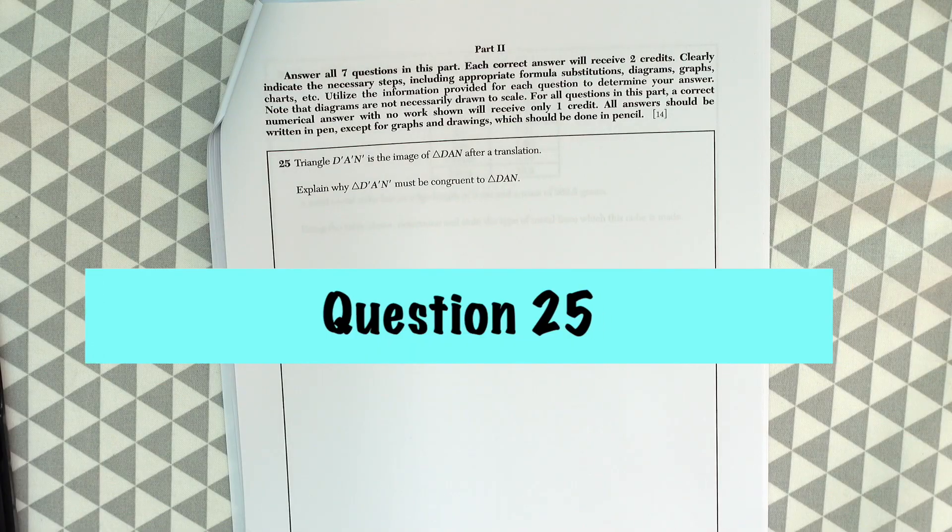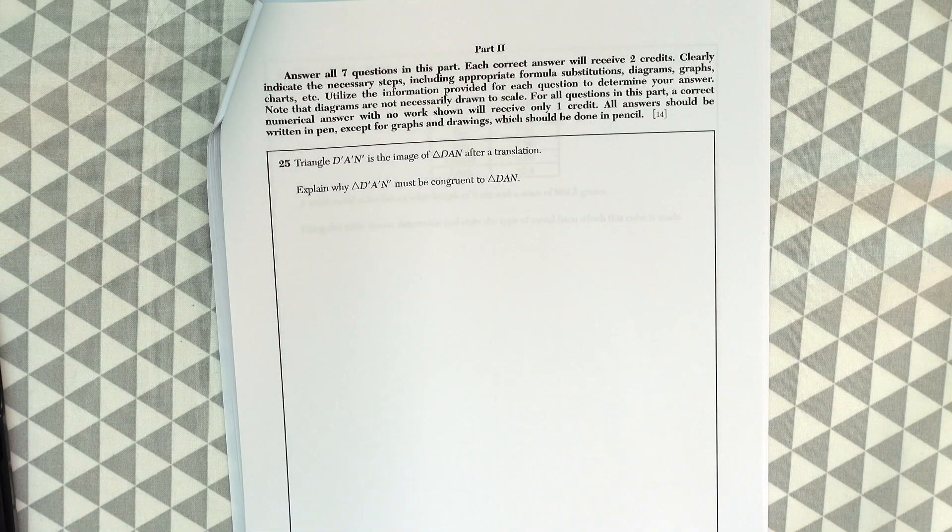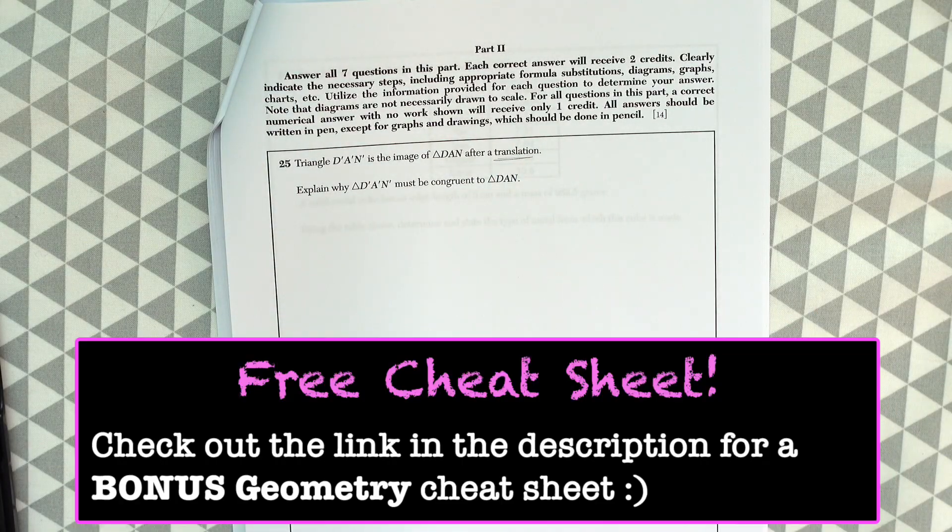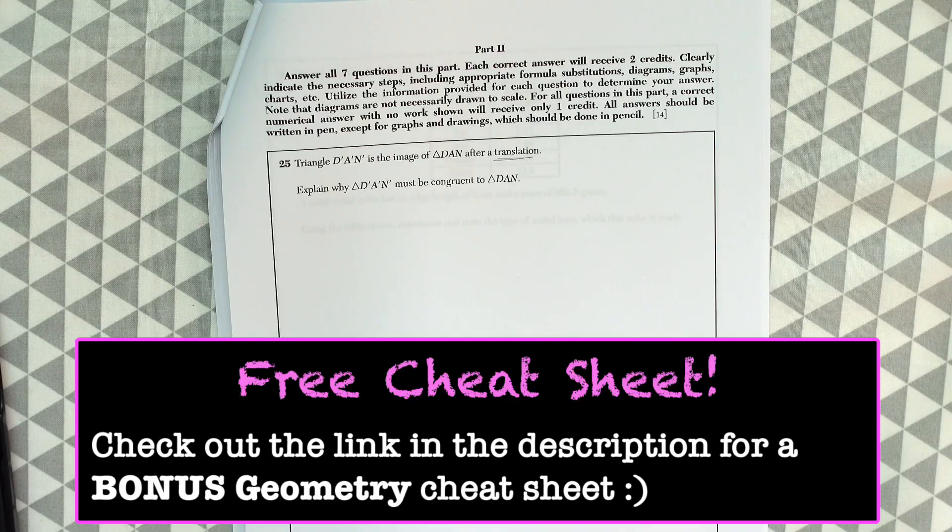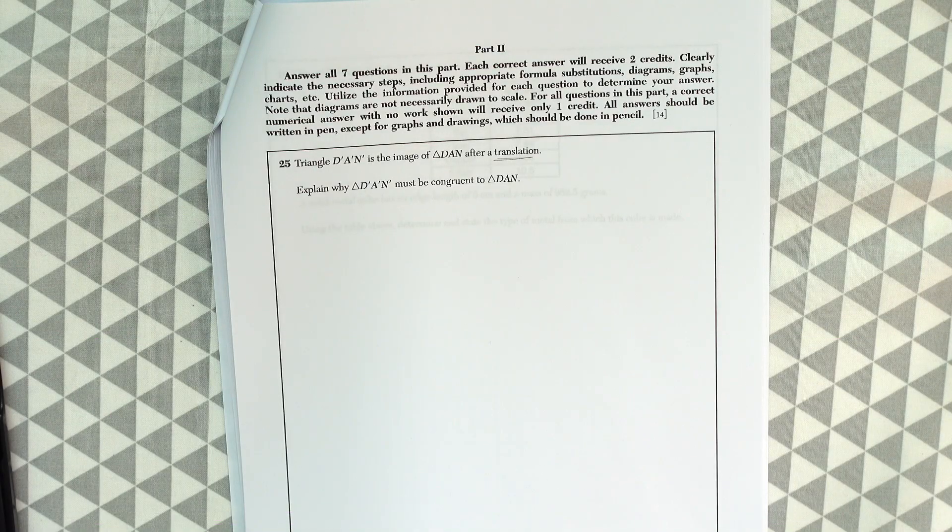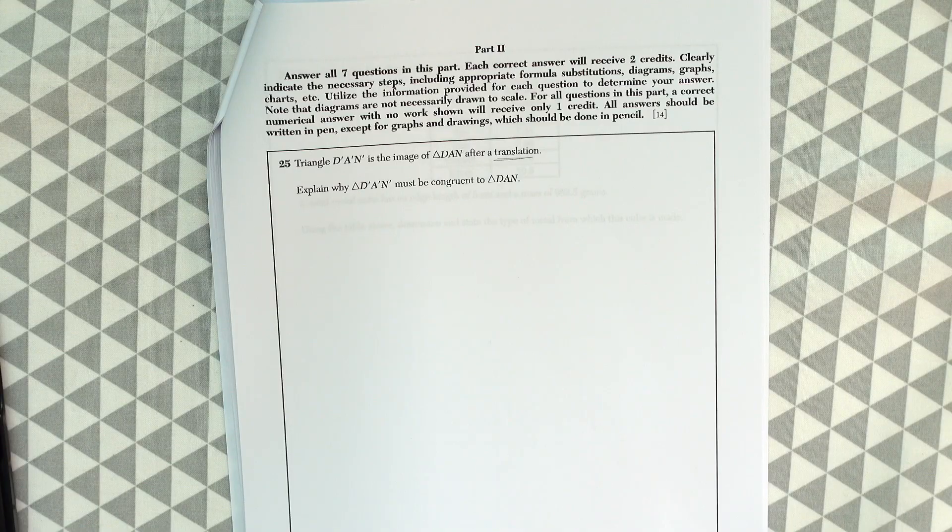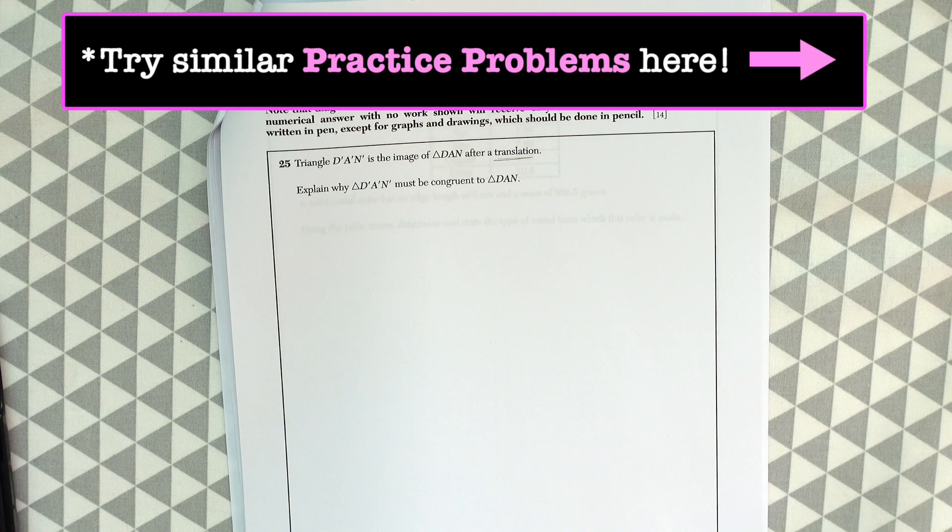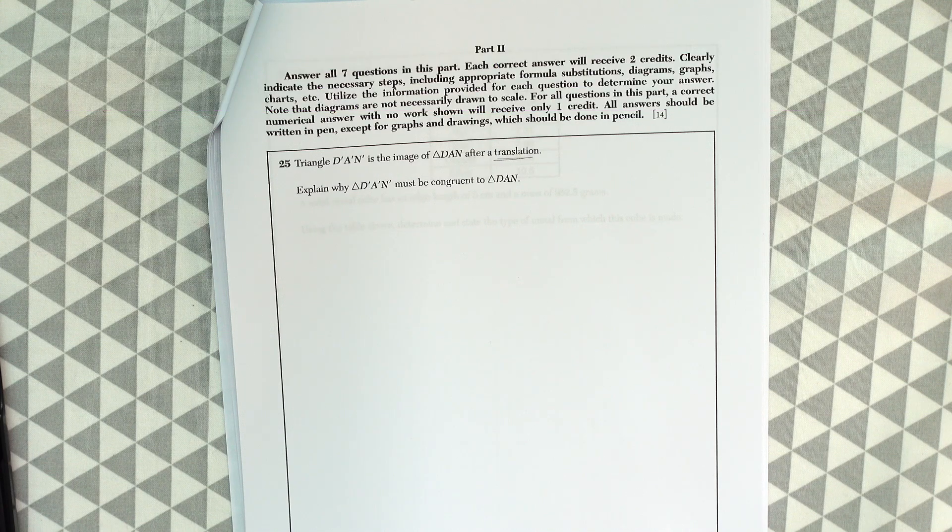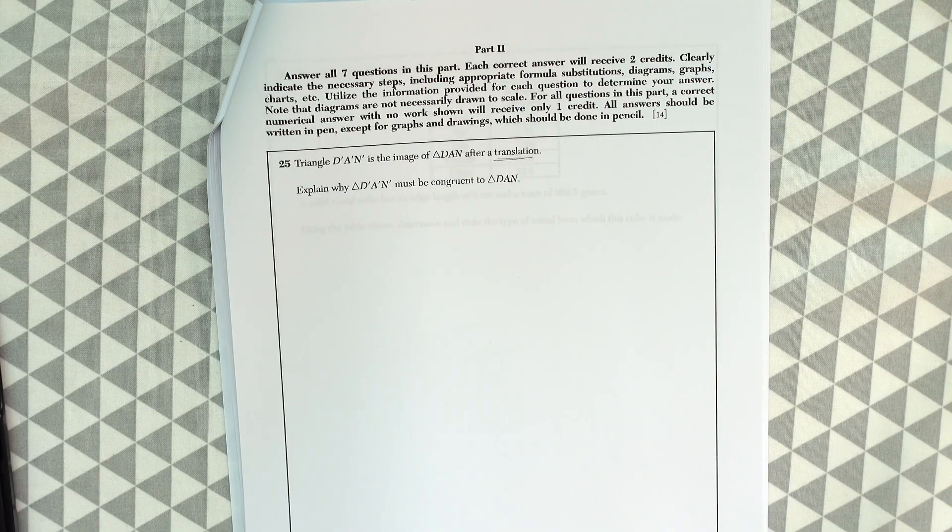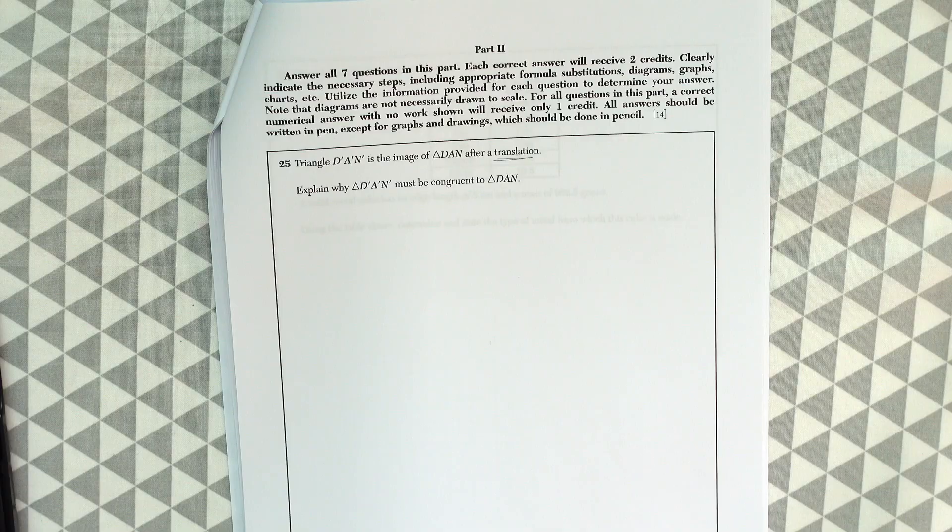Triangle d prime a prime n prime is the image of triangle d a n after a translation. So remember translation is when we move a shape like up a couple units and over to the right a couple units something like that. Explain why triangle d prime a prime n prime must be congruent to triangle d a n. So when we're doing a translation this is a type of transformation where all angles and sides are going to remain the same and retain rigid motion. So that's how we know they're going to be congruent.